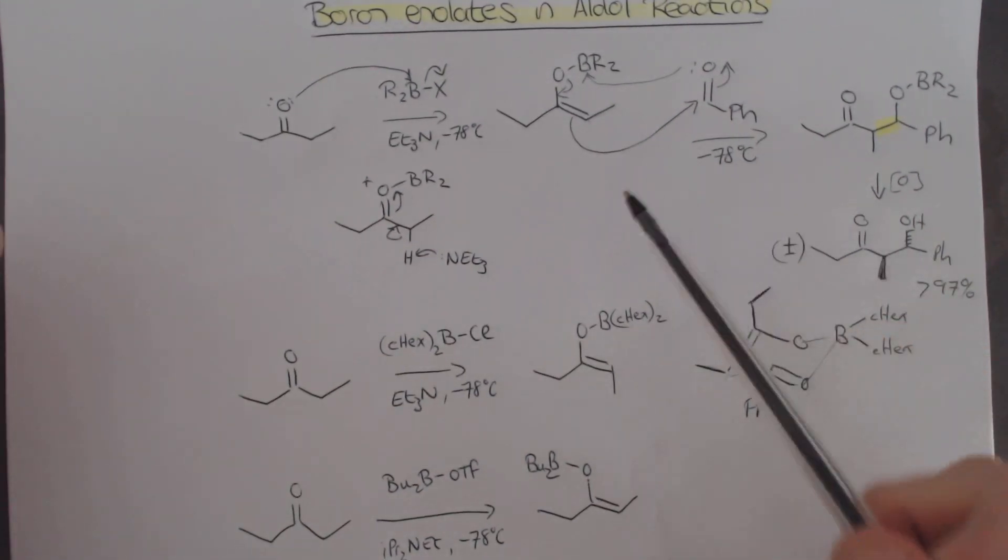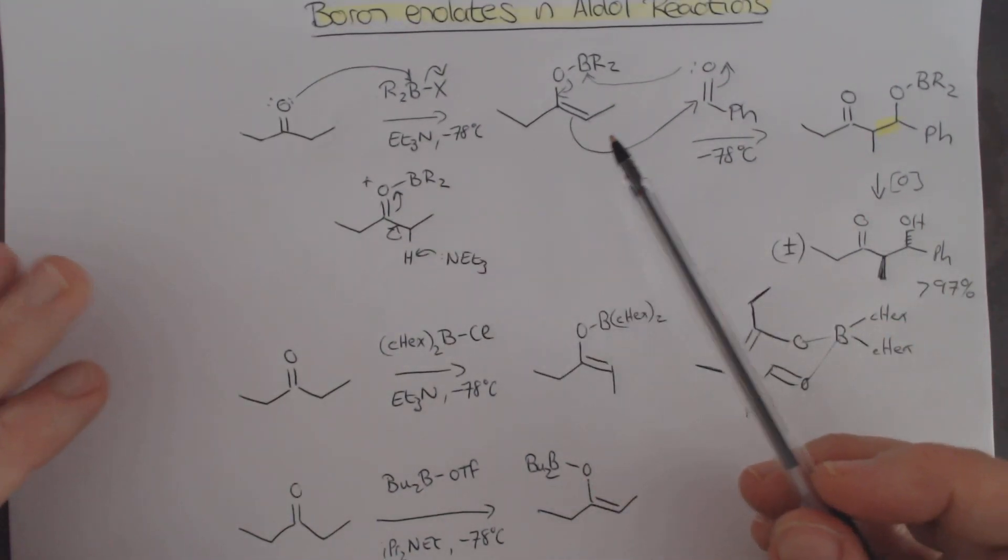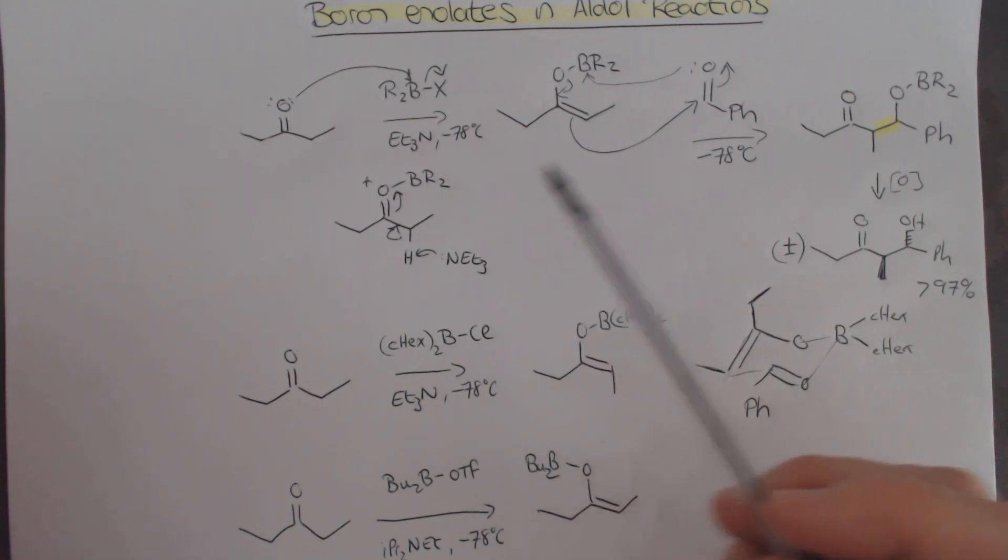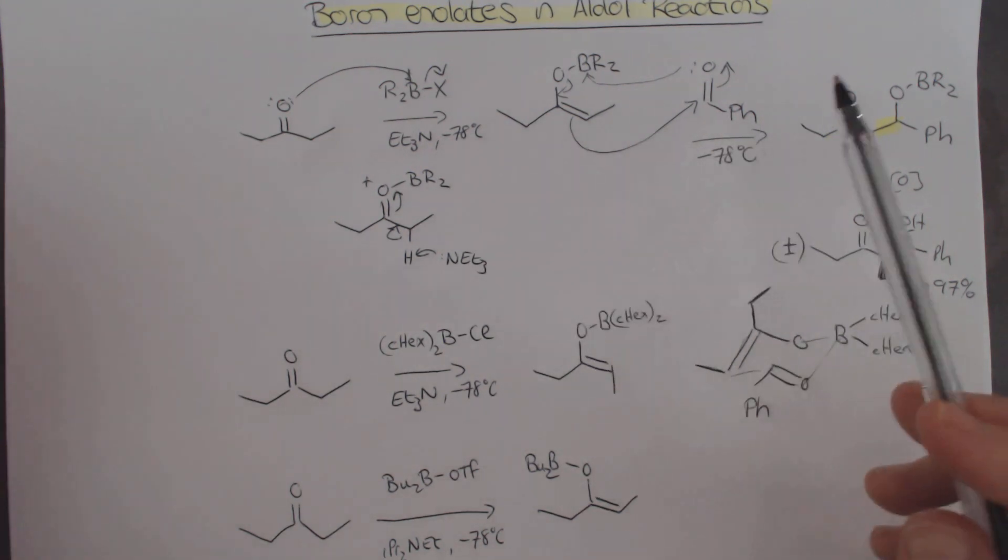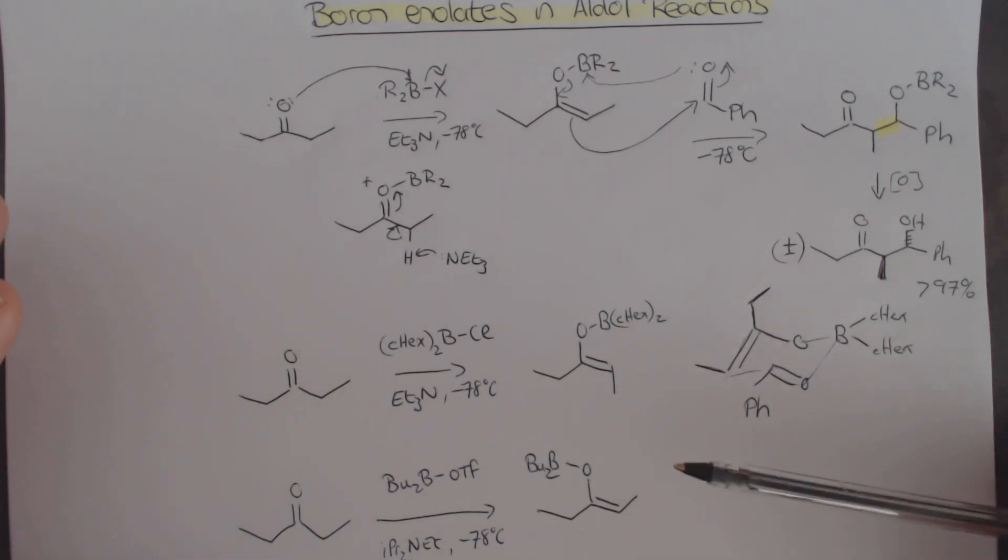Overall, boron enolates are really good nucleophiles. We're just going to, in this course, stick to them reacting with aldehydes. We don't have to think about looking at different electrophiles, but we're just looking at this, and this is the basic amount of work that you need to know.